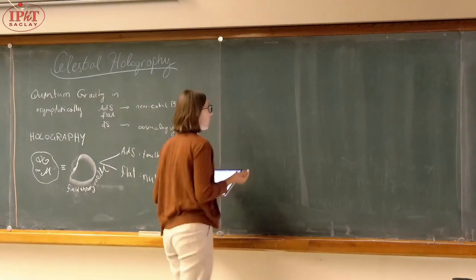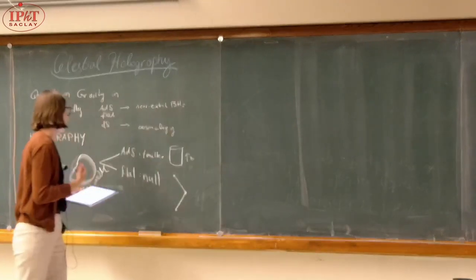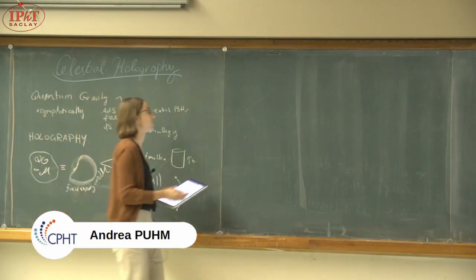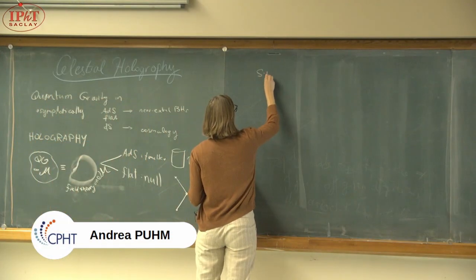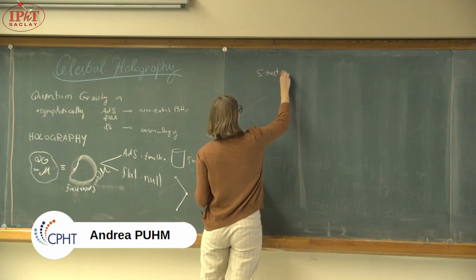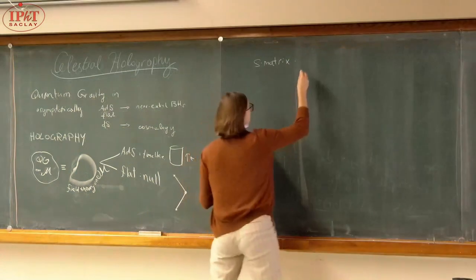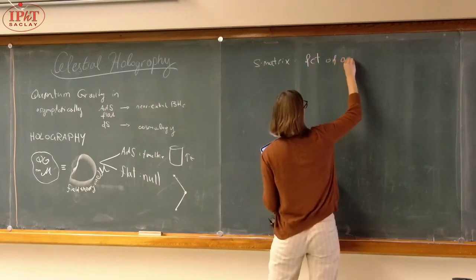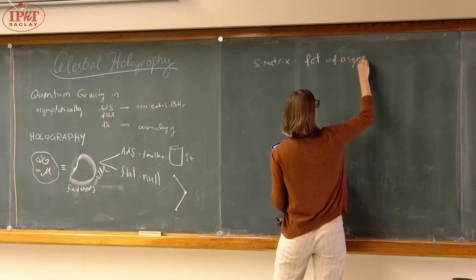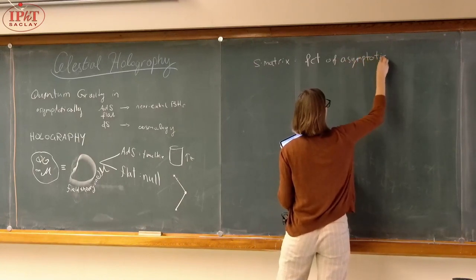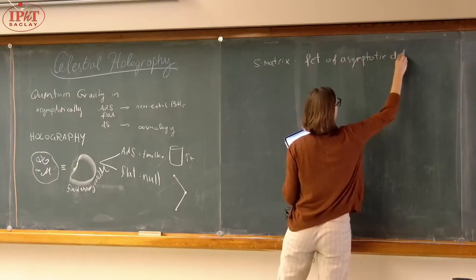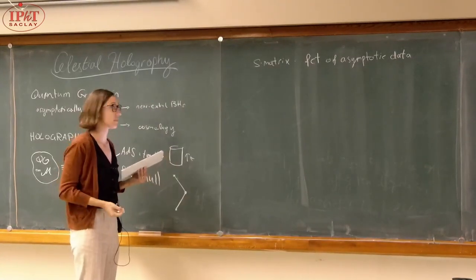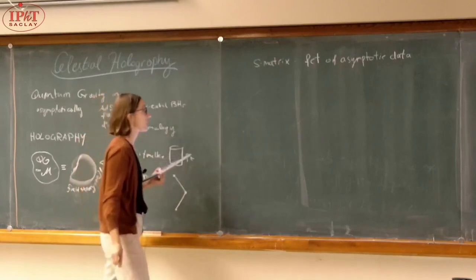The key is to start with a basic question: look at the observables. The basic observables for quantum gravity in asymptotically flat space are the S-matrix. The S-matrix is a function of asymptotic data — in particular, on-shell momenta. So it already has some holographic flavor. Let's try to utilize it.